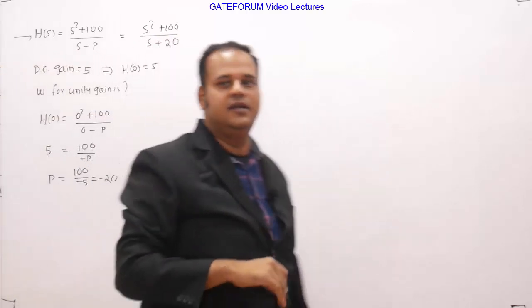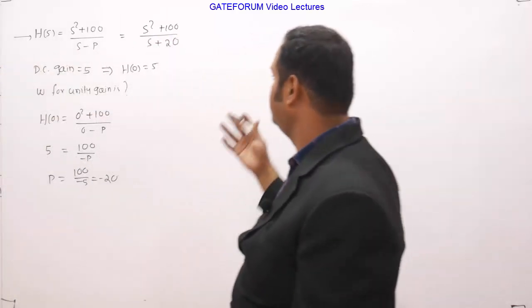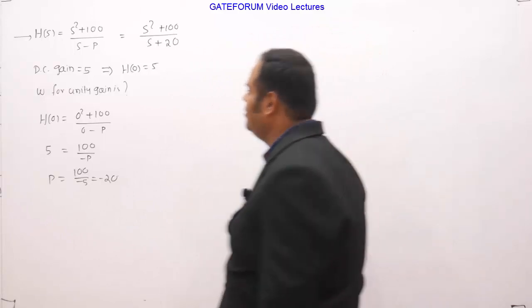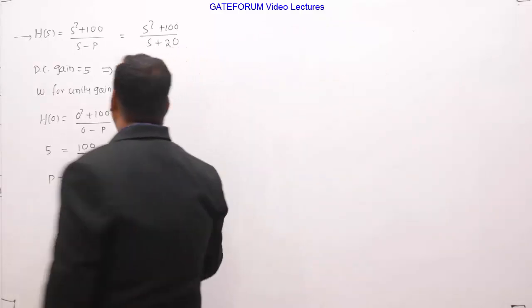Now this transfer function is s square plus 100 and s minus p, s minus of minus 20 is equals to s plus 20. So the transfer function is s square plus 100 by s plus 20. Now the question is what is omega for unity gain?